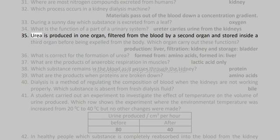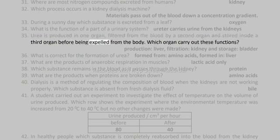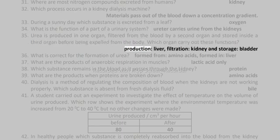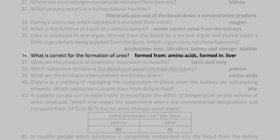35. Urea is produced in one organ, filtered from the blood by a second organ, and stored inside a third organ before being expelled from the body. Which organs carry out these functions? Production: liver. Filtration: kidney. Storage: bladder.